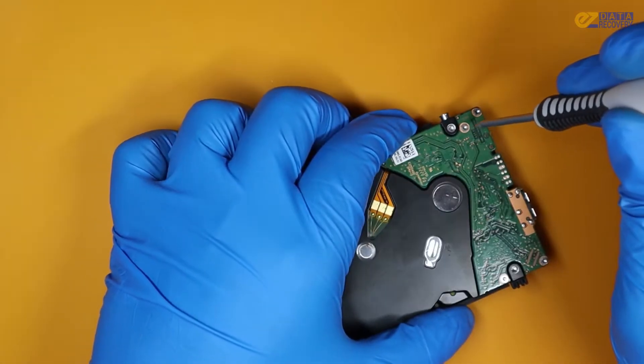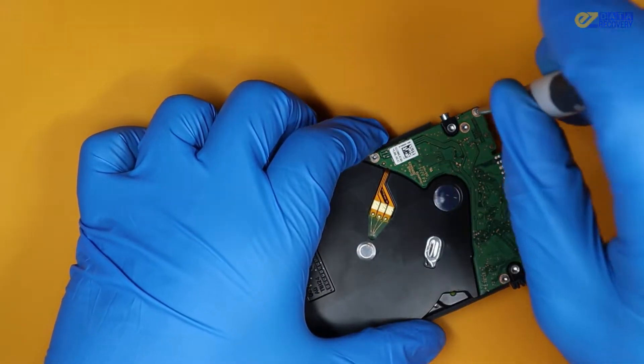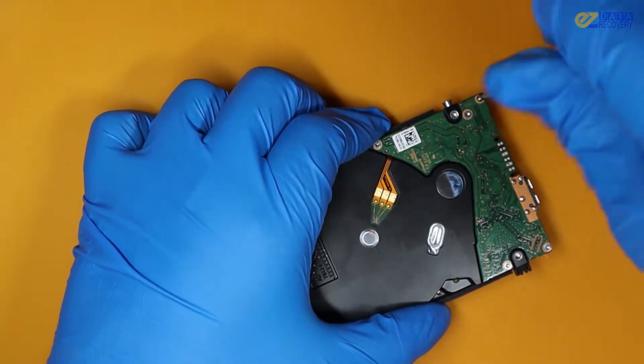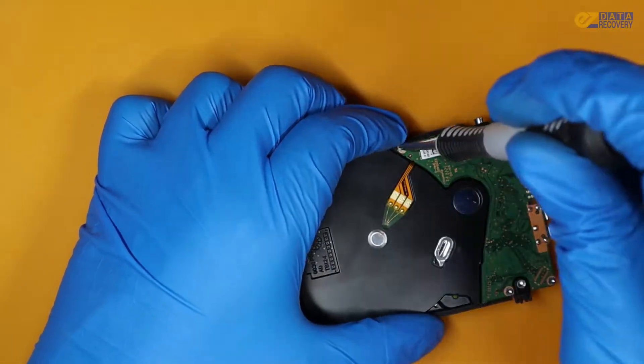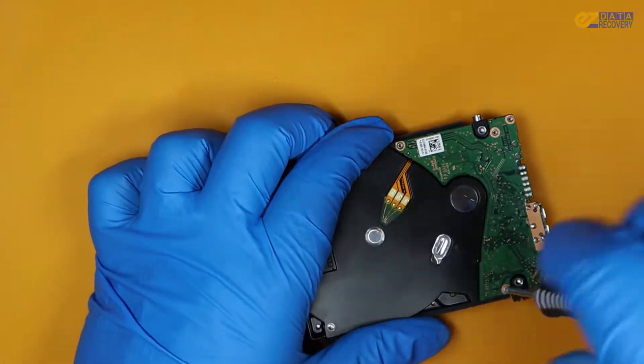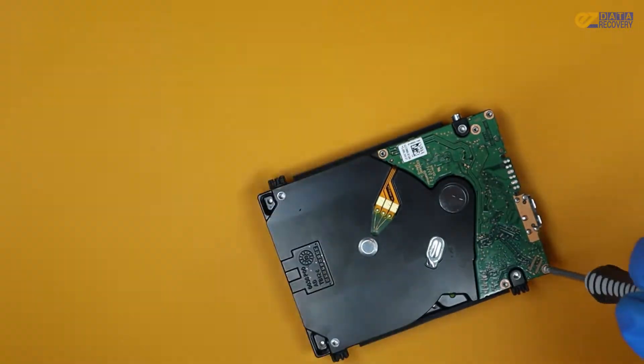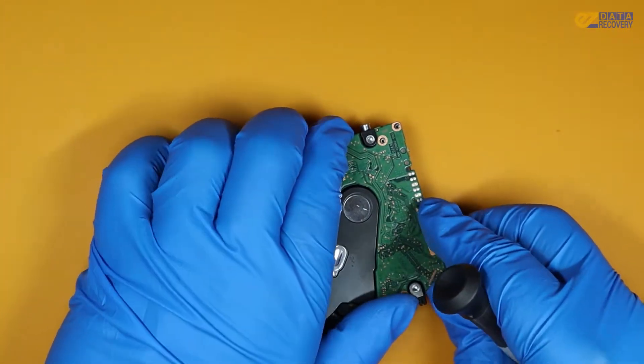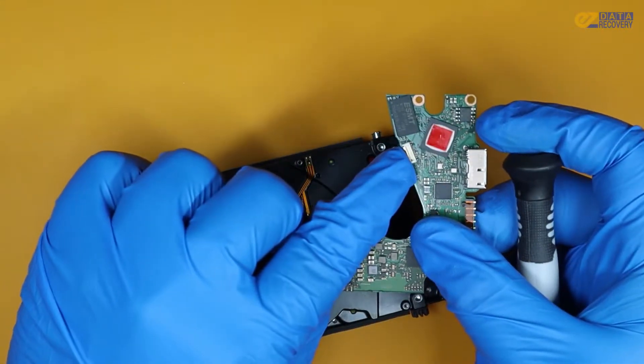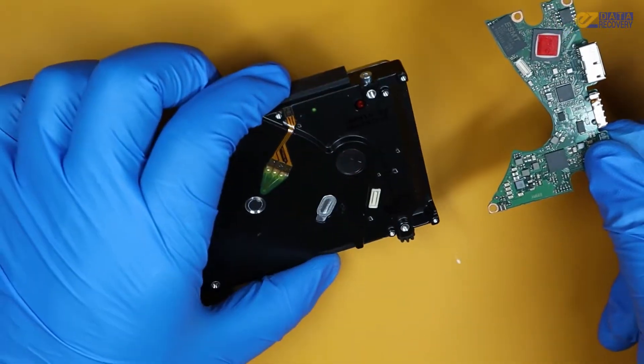Let's go ahead and remove the PCB board. We're going to use this screwdriver right here and just remove all those screws from the PCB. This little connection right here connects directly to the hard drive itself.